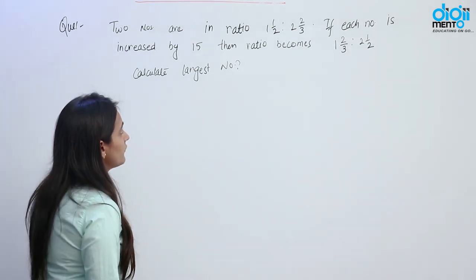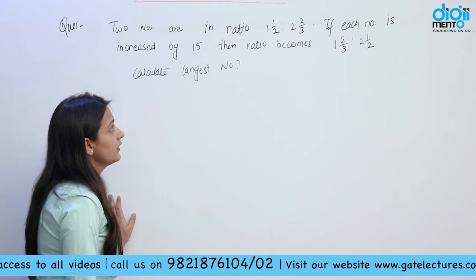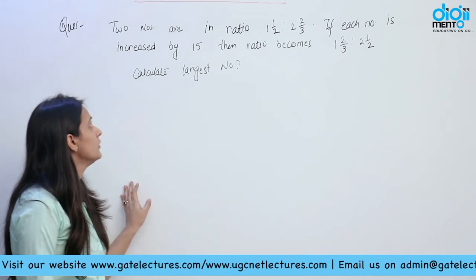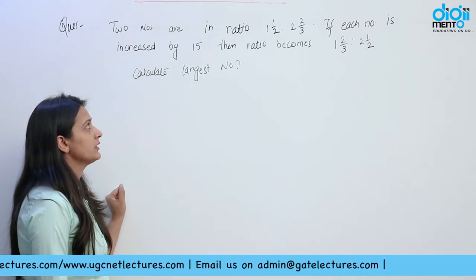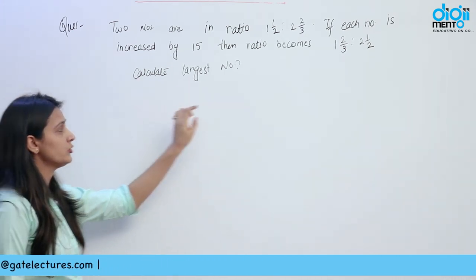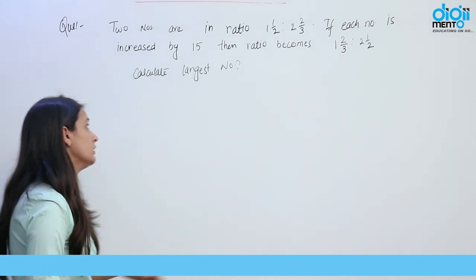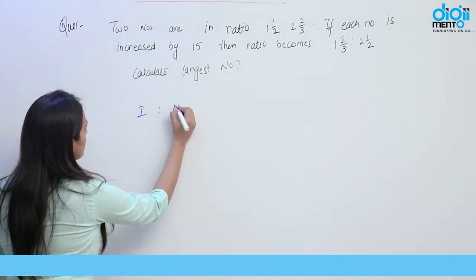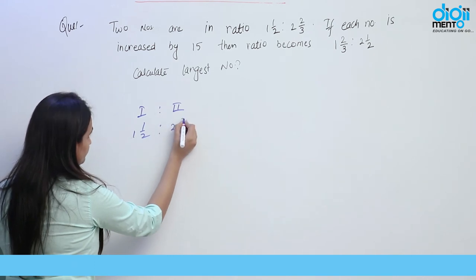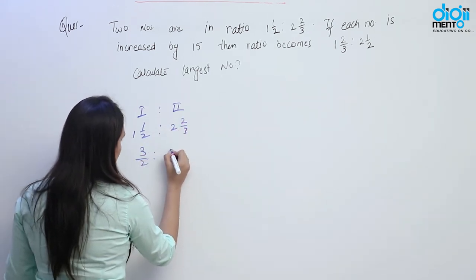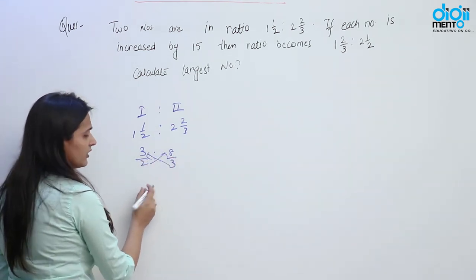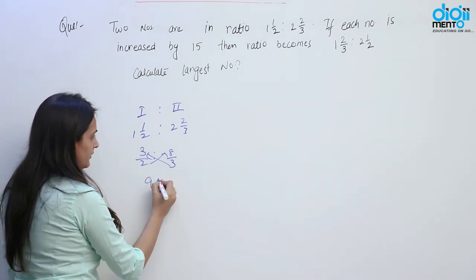Next question: 2 numbers are in ratio 1 and 1/2 to 2 and 2/3. If each number is increased by 15 then the ratio becomes 1 and 2/3 to 2 and 1/2. Calculate the largest number. Suppose we have number 1 and number 2. First of all solve the ratios — taking LCM or cross multiplying, we get the initial ratio as 9 ratio 16.